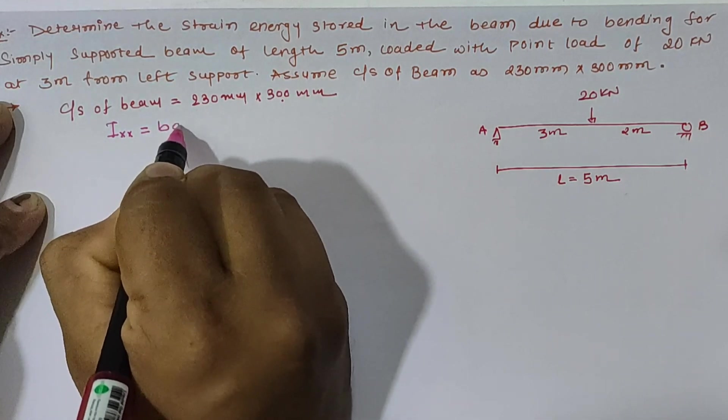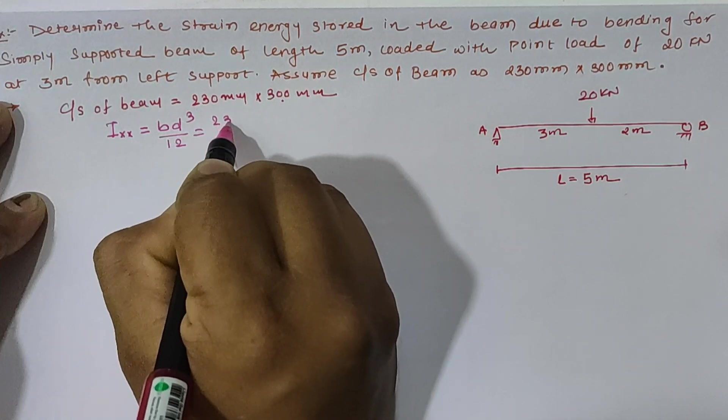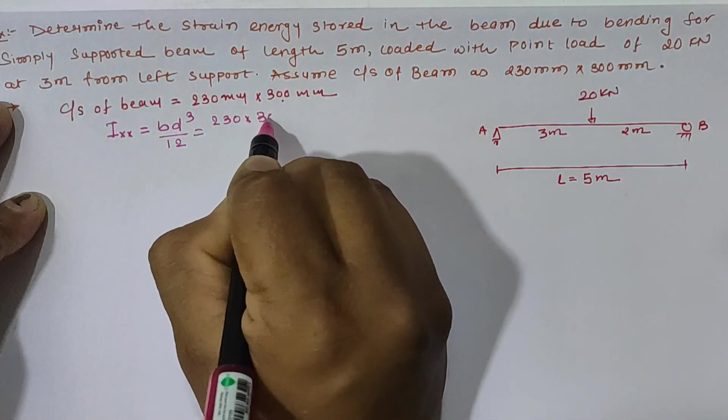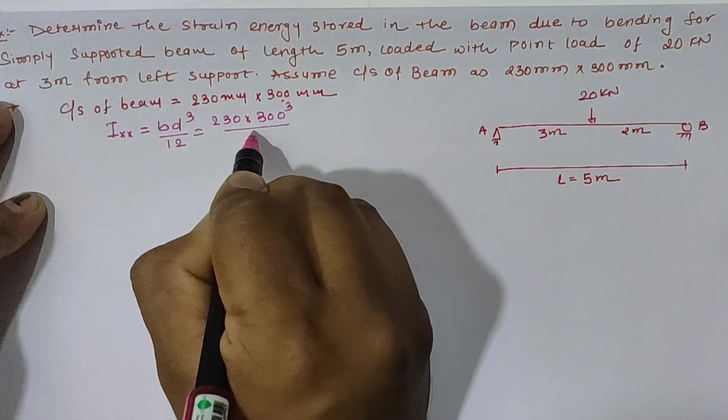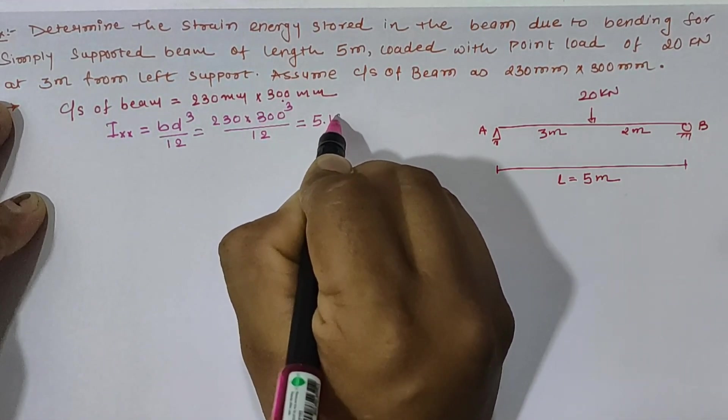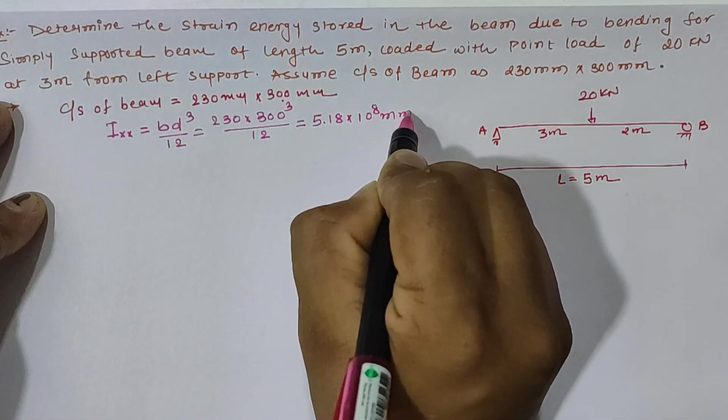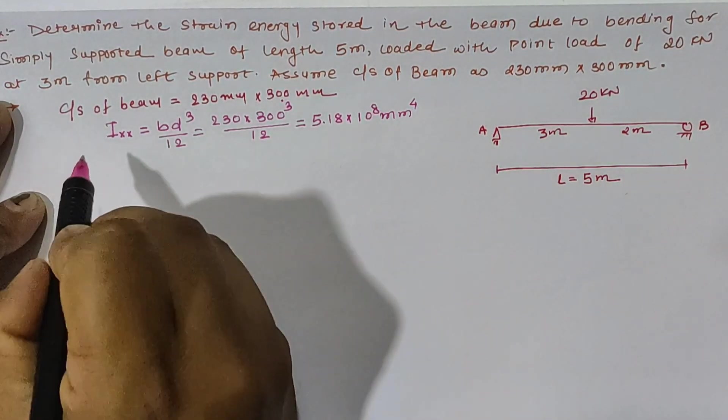This can be written as Bd³ by 12, hence B is equal to 230 mm, D is 300 mm cubed by 12 which is equal to 5.18 x 10⁸ in terms of mm⁴.